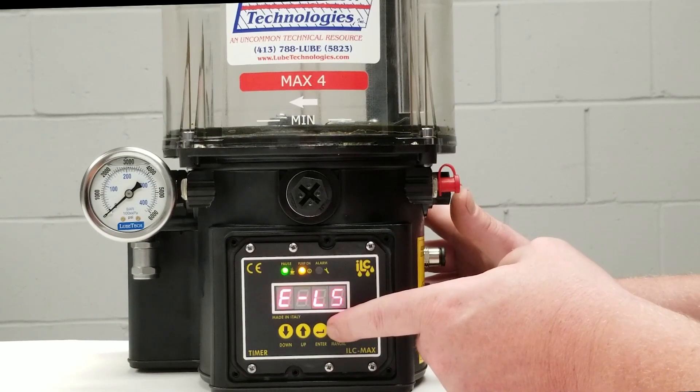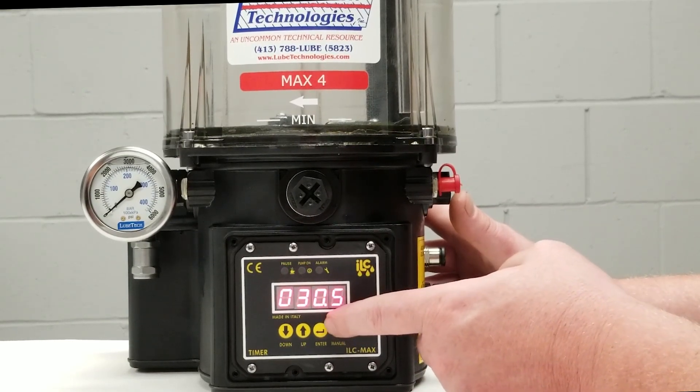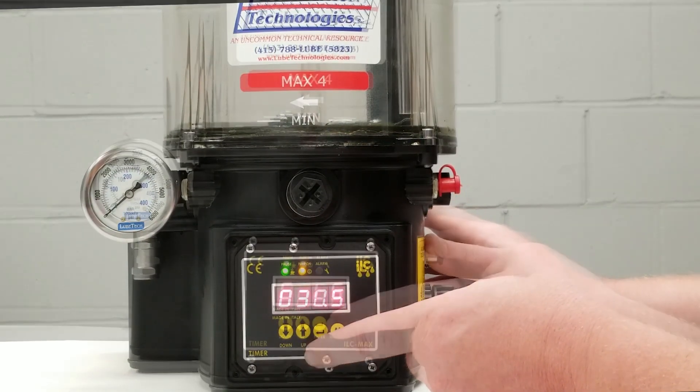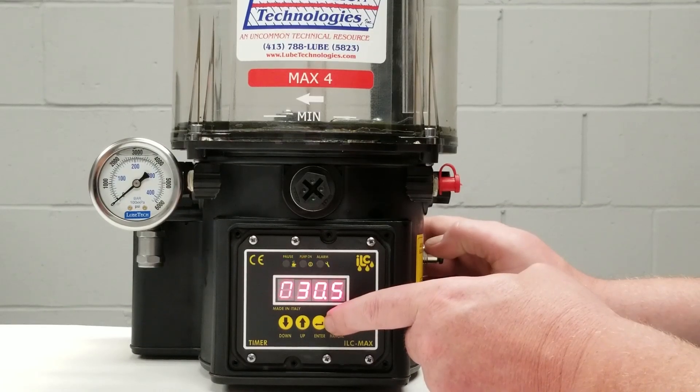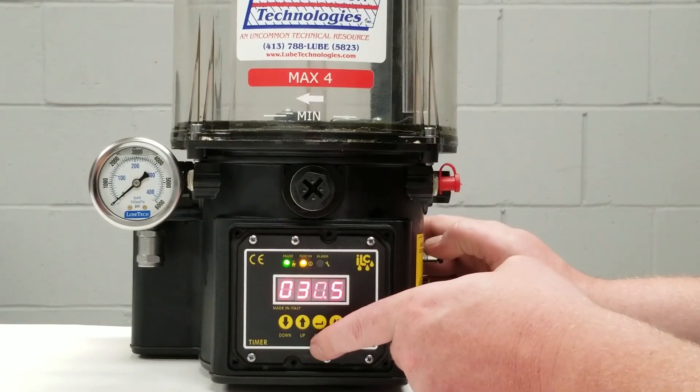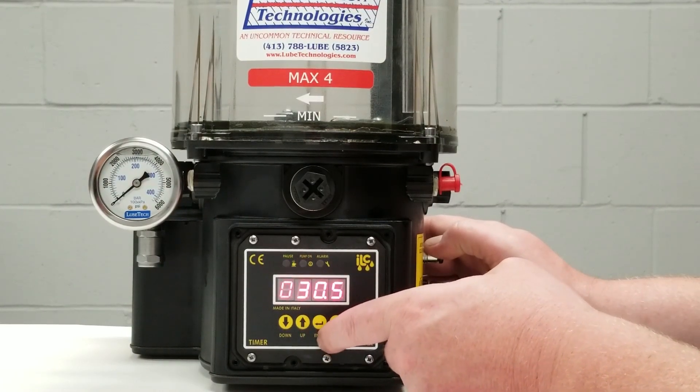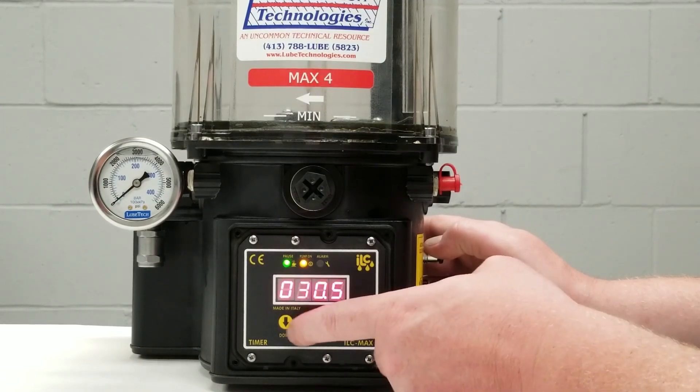E-LS. This is my work time in minutes. This is our work time in seconds. As you can see we have 30.5 seconds on the screen. We're going to leave that on there.